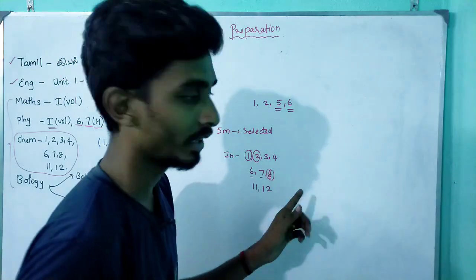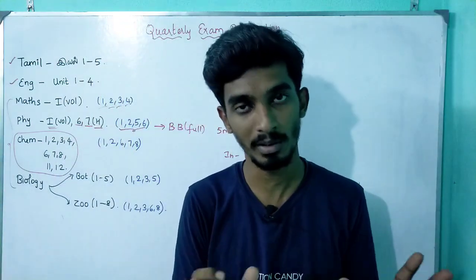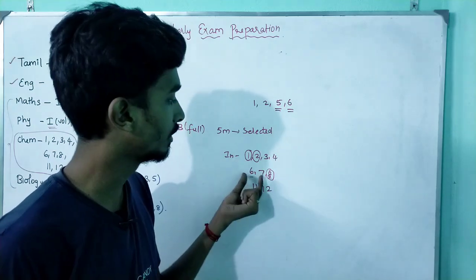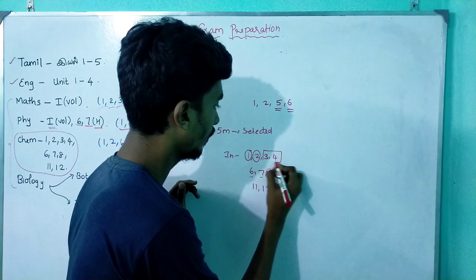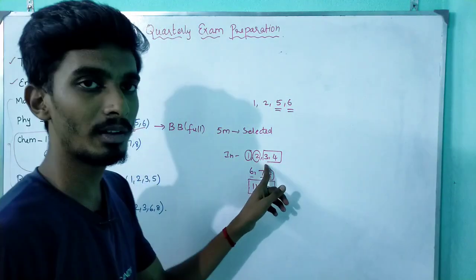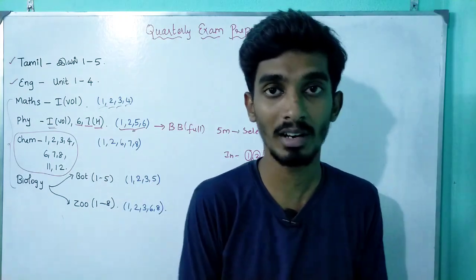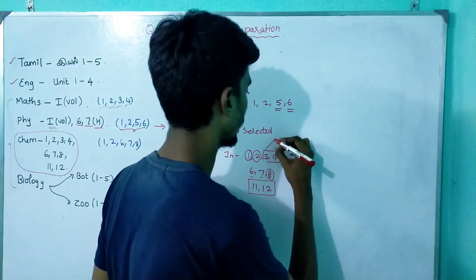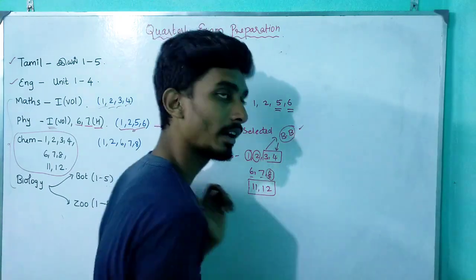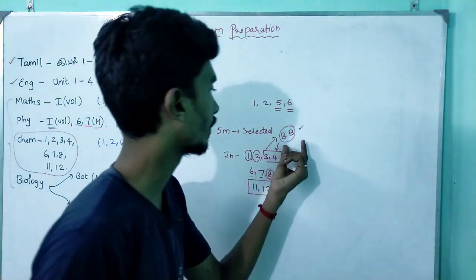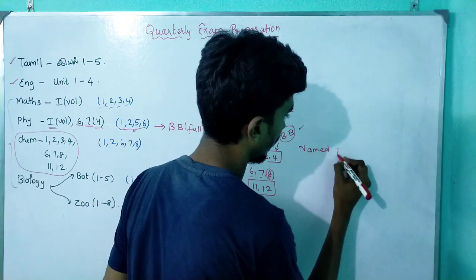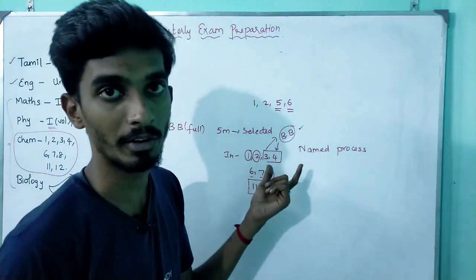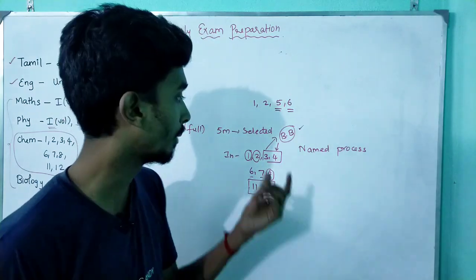Chapter 8 is very easy — if you have 10 or 15 questions, you will cover the main questions. Finish chapters 1, 2, 6, 7, 8 first. For chapter 3, which is a vast lesson covering D-block and F-block, finish the book back first, cover all the reactions, and then learn named processes like Haber process, Ostwald process, and Contact process. Also cover important equations in chapter 3.